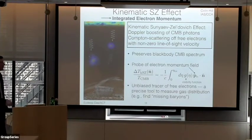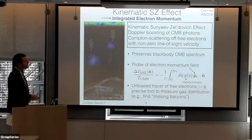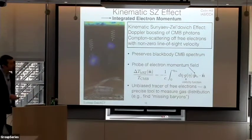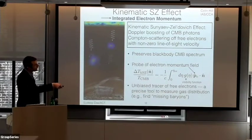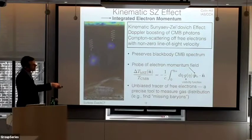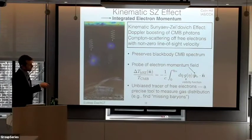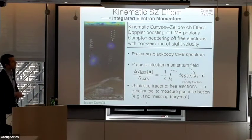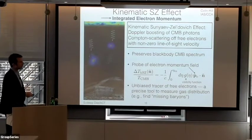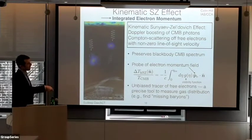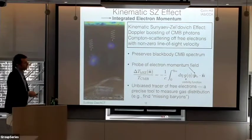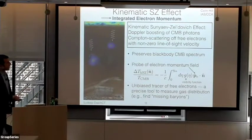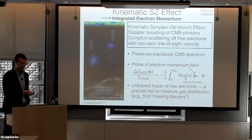Some important facts about the kSZ effect: it preserves the blackbody spectrum of the CMB because it's basically just a boost transformation between frames. It's a probe of the electron momentum field. The temperature fluctuations induced by the kSZ effect are given by this particular line-of-sight integral, where the key quantity is P_e — the electron momentum field, the product of electron density and velocity. The large-scale linear-theory velocities enter here, so we can use this as a precise tool to probe the small-scale electron distribution directly, for example to locate the so-called missing baryons.